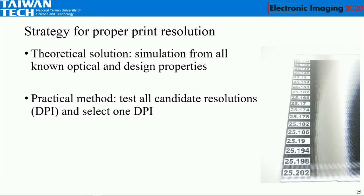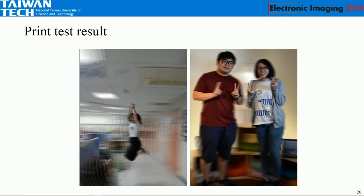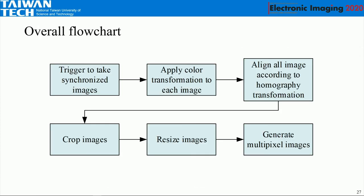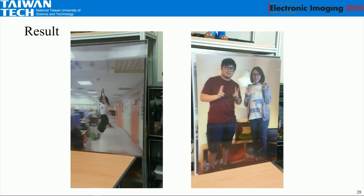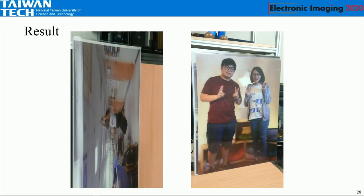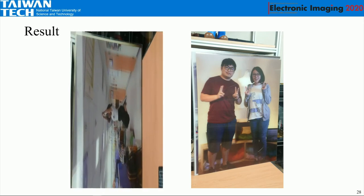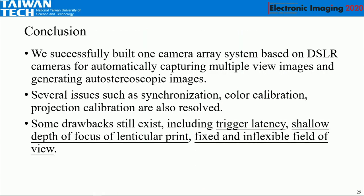We use a practical method to check the printed resolution, and this is the final result. The overall flowchart looks like this. This is the final result — I'm sorry the video has been rotated, but this is just a demonstration. In conclusion, we have successfully built a camera assistant to generate multipixel imagery and overcome several issues including synchronization, color calibration, and projective transformation.